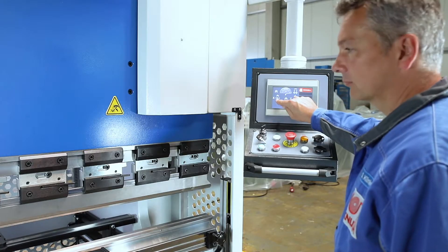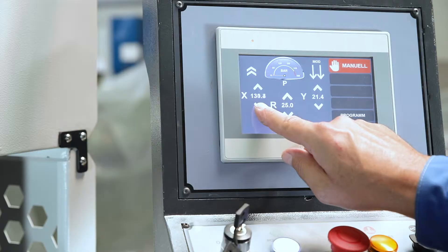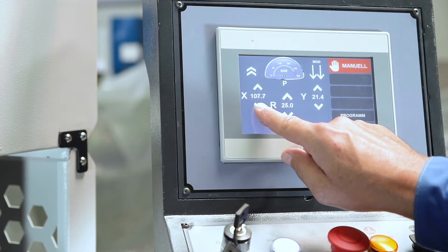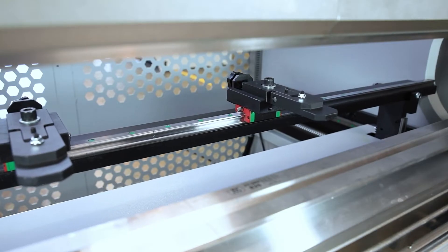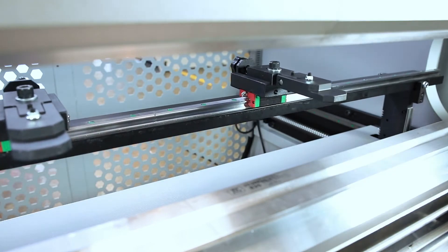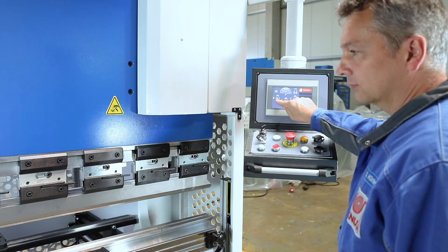All functions are entered and called up directly on the touch screen of the control unit. In manual mode, all axes can be positioned by motor and the set values are shown on the display.